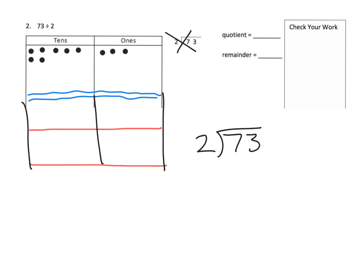We're going to take the seven tens and divide them amongst our two groups. Going through: 1, 2, 3, 4, 5, 6 — and we have one ten left over, because we can't split that extra one equally. We've used up six of our seven tens and have one left over. In the standard algorithm we put a 3 here, because each group gets three dots; we've used up six dots total, and we have one dot left over.